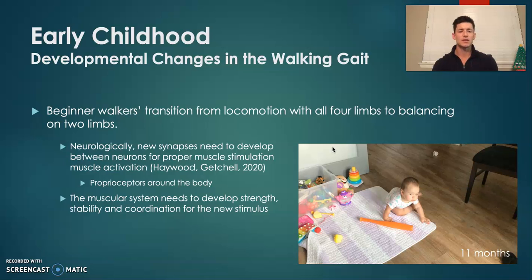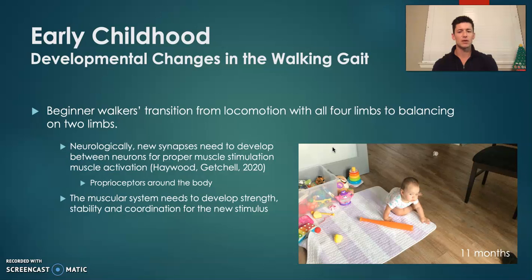Neurologically, this is a new stimulus for their bodies. The synapses between neurons need to begin signaling to the brain this new stimulus and to help increase the amount of proprioception and to help increase the amount of muscular strength needed for stability and the coordination for the walking gait to occur.